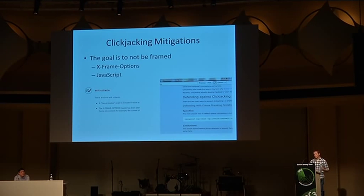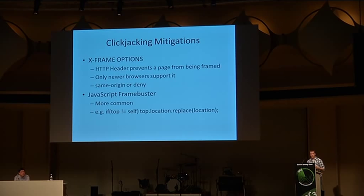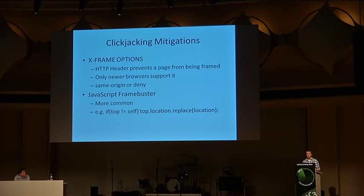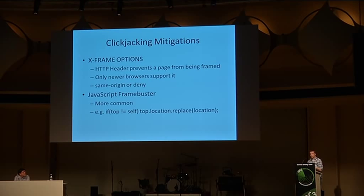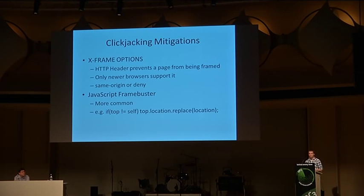X-Frame-Options is an HTTP header sent in an HTTP response — pioneered by the IE team, but all major browsers support it now. When a browser sees it, it will say okay, I'm not going to frame this page. There are two options: same-origin or deny. Same-origin will only allow framing by pages on the same origin; deny means it just won't frame pages at all. There are no bypasses for X-Frame-Options, so it's a great mitigation for clickjacking and if you have it, you're probably protected with modern browsers.